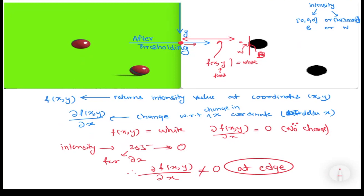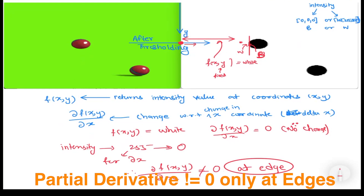Once we enter the ball region, which is black, the intensity value again ceases to change with respect to x, so the partial derivative is zero again while we are inside the ball. At the right edge of the ball, where left is black and right is white, we again see a non-zero value — this time negative but the same in magnitude.